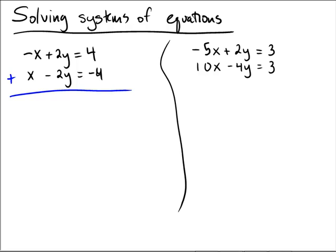Negative x plus x is 0, 2y minus 2y is 0, and 4 minus 4, or plus negative 4 I should be saying, is 0. So we get 0 equals 0.